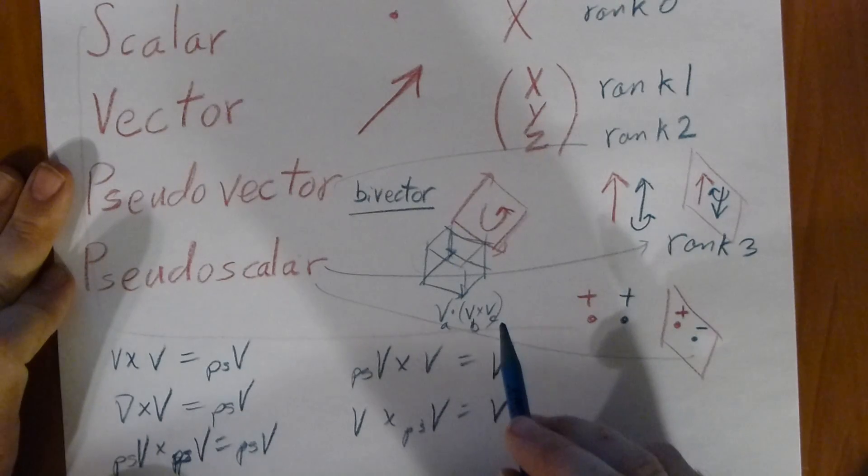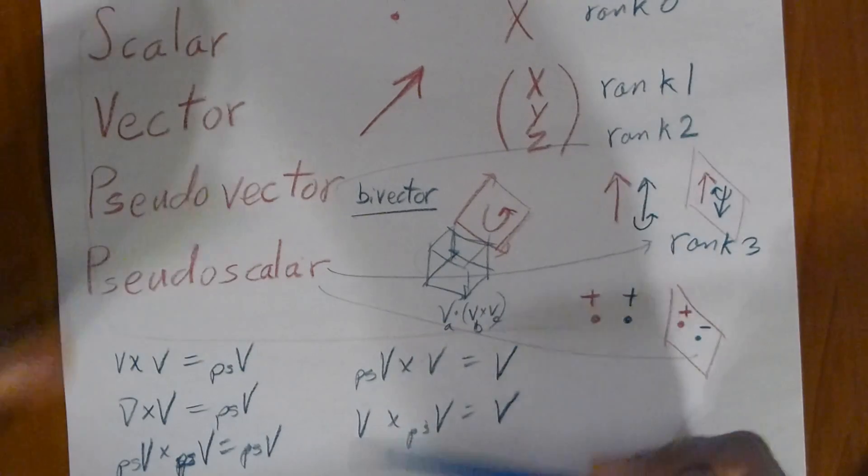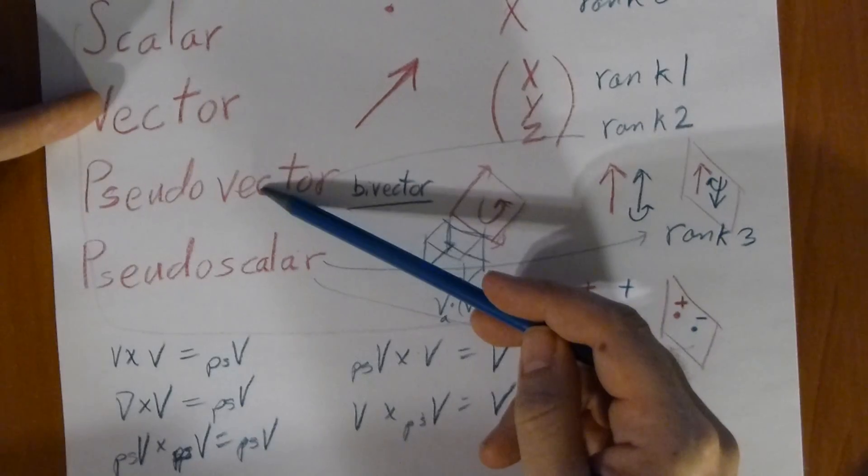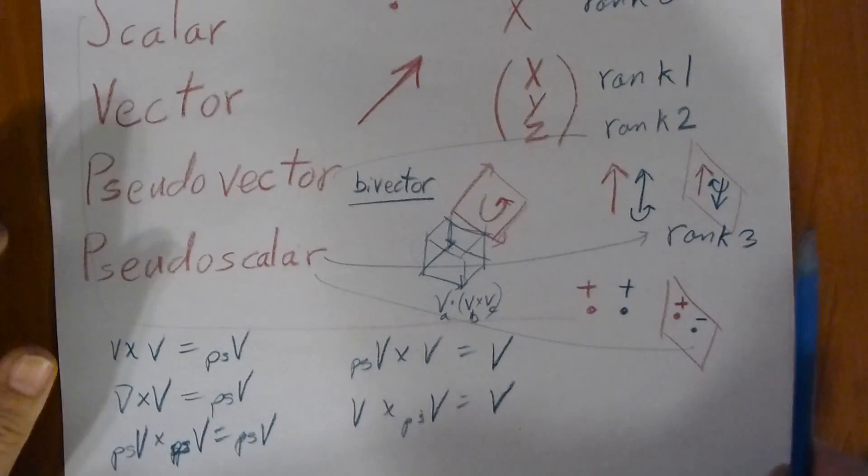These quantities are important to keep in mind because it's a quick way of telling whether an equation works. Because like I said, you can't add these and these, or these and these—it simply doesn't work.